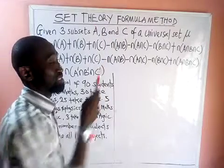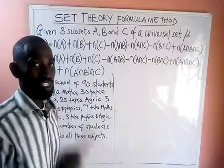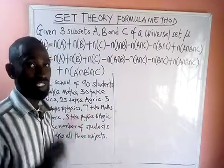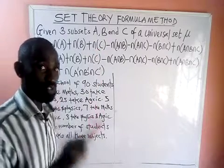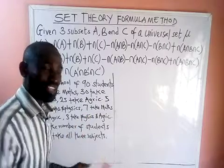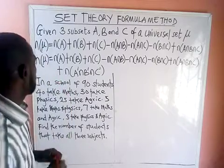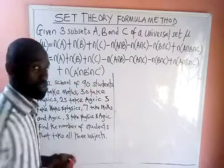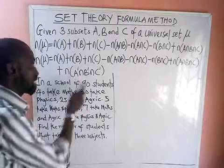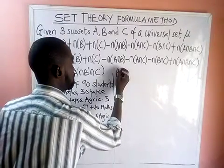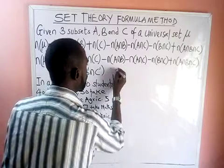The choice of which formula to use depends on the data we are given in the question. The formula to use to solve a particular question depends on the data we extract from the question. Let's take this example: in a school of 90 students — meaning the total number of students in that school is 90 — we write: number of universal set equals 90.